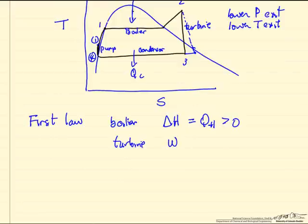And then the turbine, work is equal to delta H, and this is less than zero because we're taking energy out.